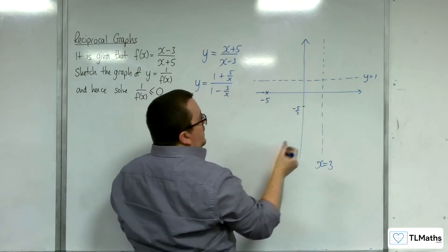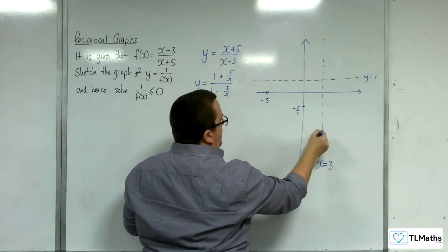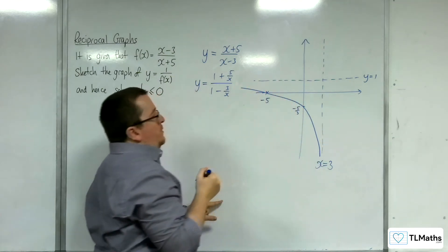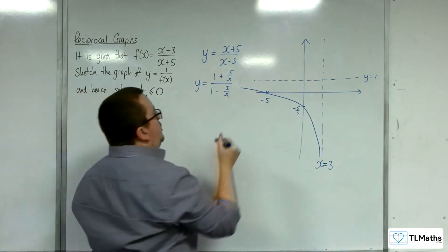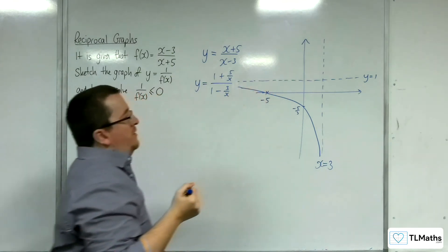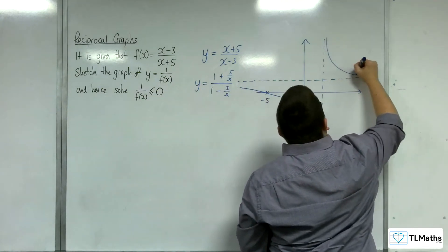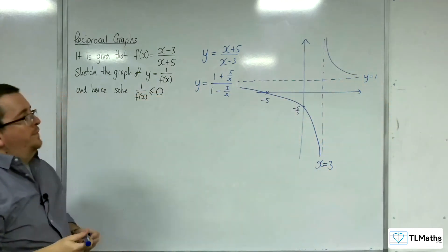And so, the curve must look like this in order to satisfy those two bits of information and tend towards that horizontal asymptote. And this one, this part of the graph will be up there.